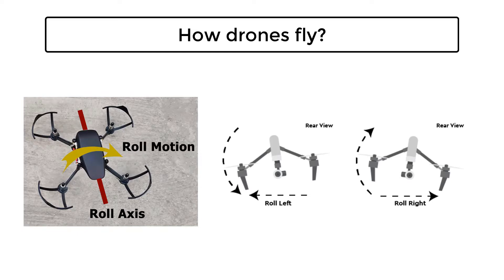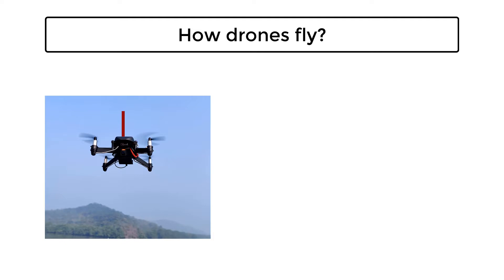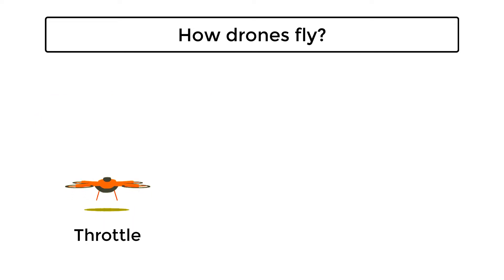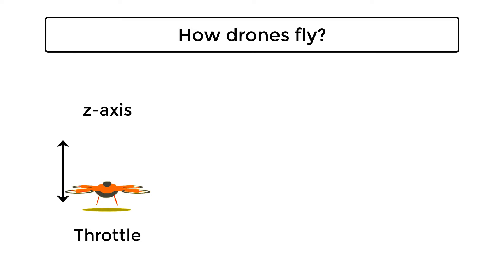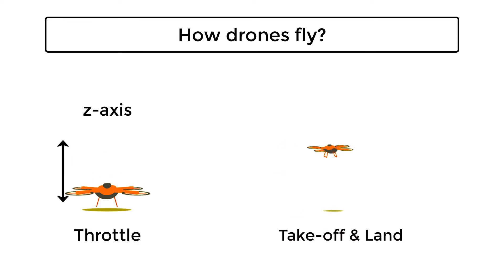Then there is pitch, which helps the drone make forward and backward movements. Yaw controls the clockwise and counterclockwise rotation, which assists the drone in changing direction while flying. The last one is throttle, which helps the drone move up and down along the z-axis and essentially helps the drone in taking off and landing.